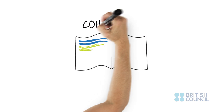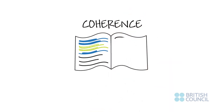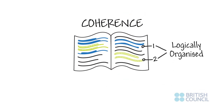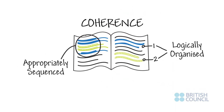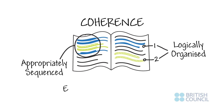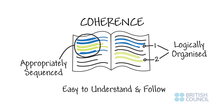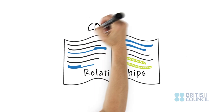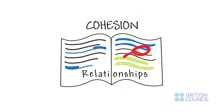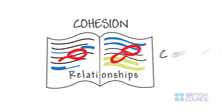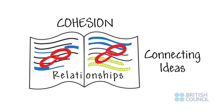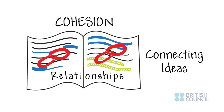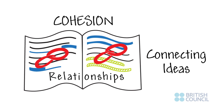Coherence refers to the flow of your writing. Your ideas should be logically organized and appropriately sequenced into paragraphs so they are easy to understand and follow. Cohesion refers to linking words that help you connect ideas and show the relationship between paragraphs, sentences, or parts of sentences.